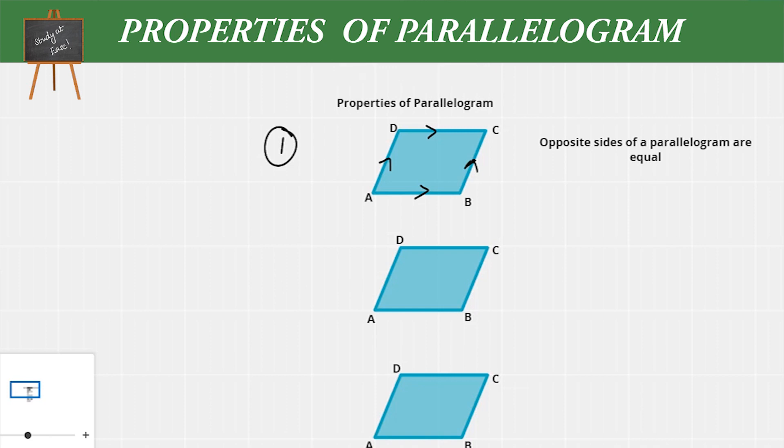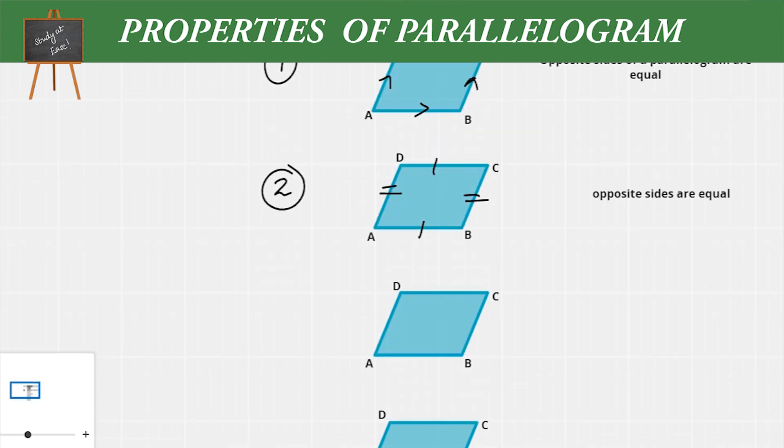Now let's move on to the second property. In this parallelogram ABCD, the second property is that AB is equal to CD and BC is equal to AD. That means opposite sides are equal in a parallelogram.